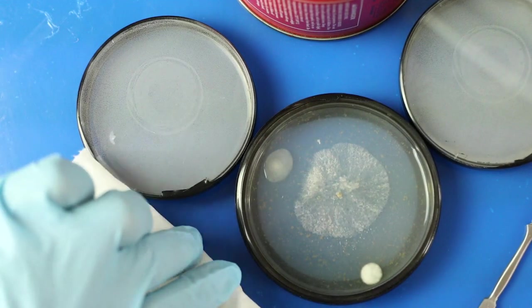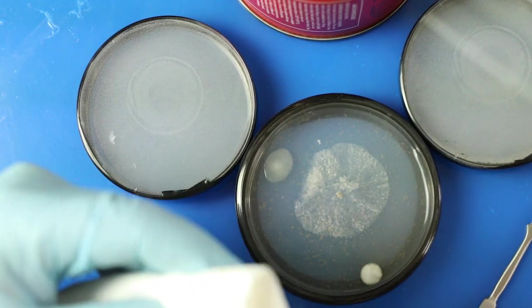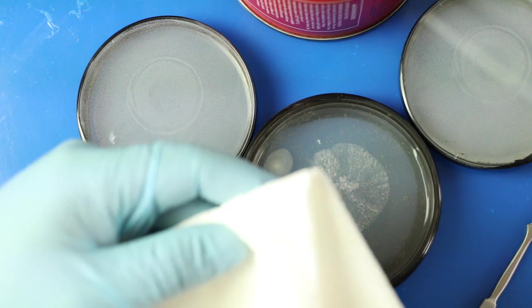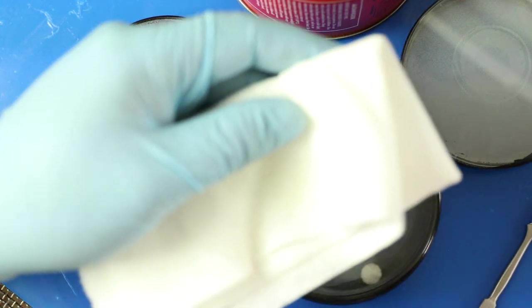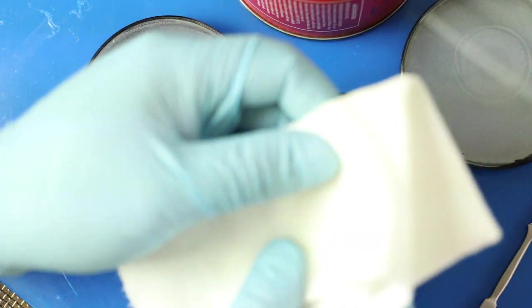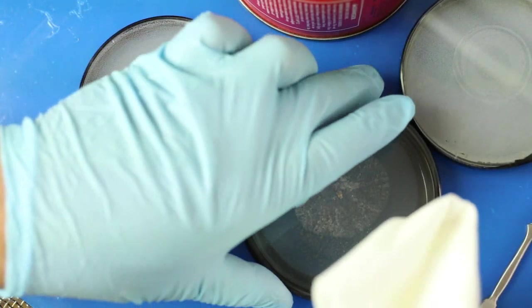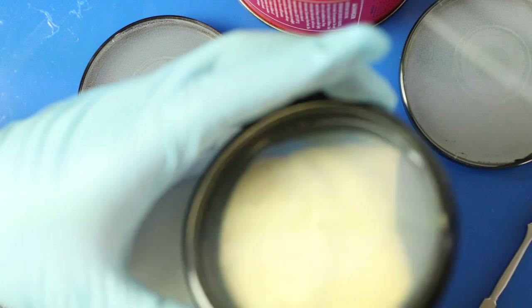After that, and after they start to proliferate on the agar, you're going to have to notice and look for contamination. As you can see in this sample, we do in fact have contamination in the outer sections of the diameter of the petri dish here.